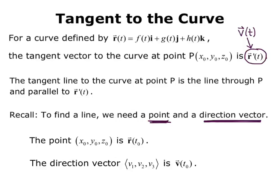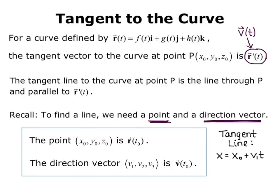The direction vector v₁, v₂, v₃ is v of t₀. So you take the time you're given, plug it into your velocity function, and that's your direction vector for the line. Remember the parametric equations for a line are x equals x₀ plus v₁ t, y equals y₀ plus v₂ t, and z equals z₀ plus v₃ t. So that is how we would write our tangent line.